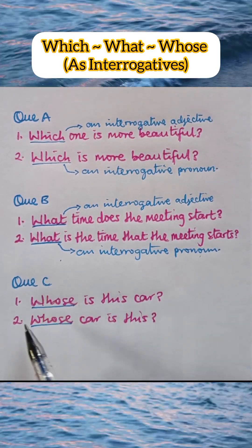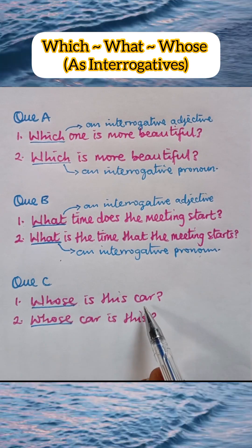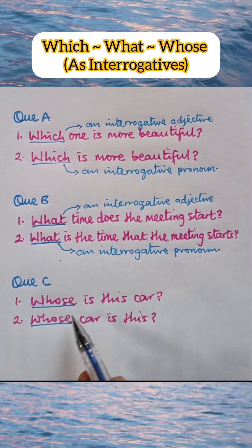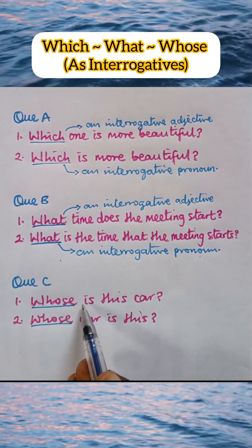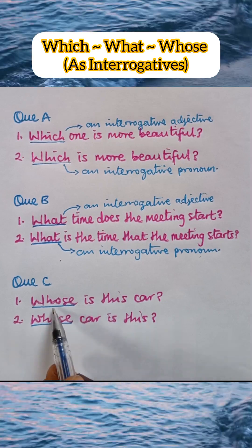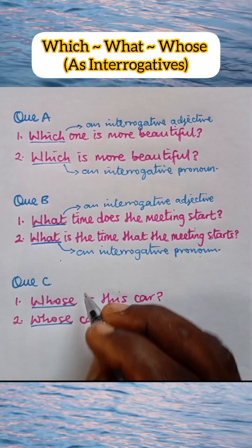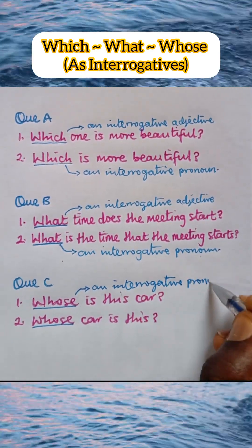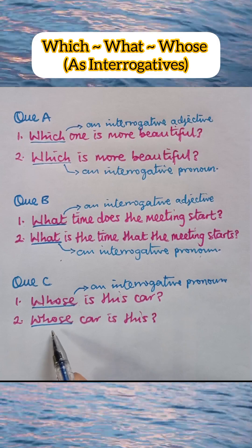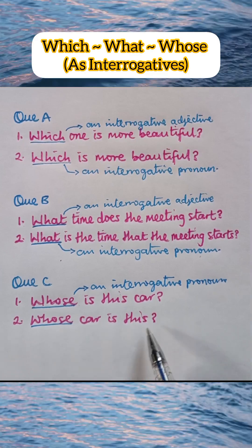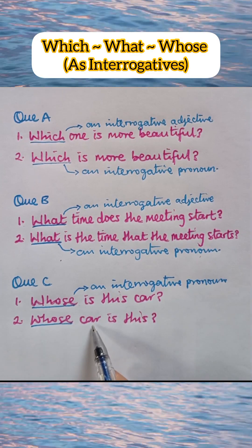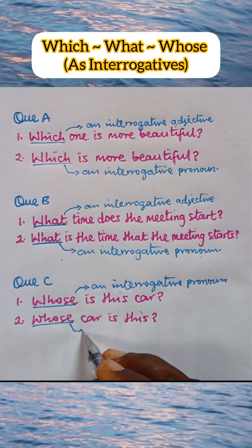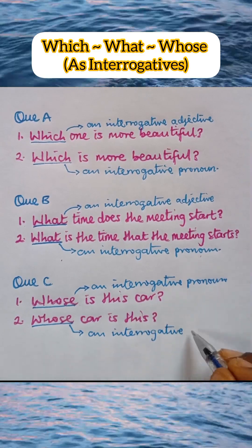Now let's go to the last one, question C. 'Whose is this car?' Look at this 'whose' — both of them are interrogative words. But this 'whose' stands in place of a noun; it is not modifying any noun, so it is a pronoun and is best described as an interrogative pronoun. Number 2 says 'whose car is this?' As you can see, 'whose' here modifies the noun 'car,' which makes 'whose' an adjective and is best described as an interrogative adjective.